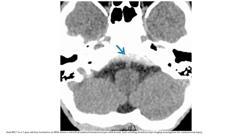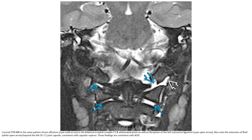This is a non-contrast CT in a 7-year-old boy involved in a motor vehicle accident, showing a retroclivus epidural hematoma — a finding that should prompt imaging investigation for cranial cervical injury. MRI in the same patient shows effusion in the bilateral occipital condylar and atlanto-axial joints, disruption of the ligamentous structures, and extension of fluid beyond the atlanto-occipital joint capsule, consistent with capsular rupture and AOD.